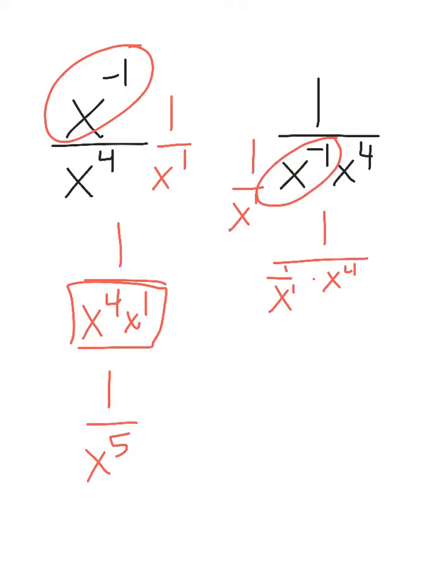That x to the 1st, when you have 1 over 1 over x to the 1st, it becomes 1 times x to the 1st over 1. So now I have x to the 1st over x to the 4th.